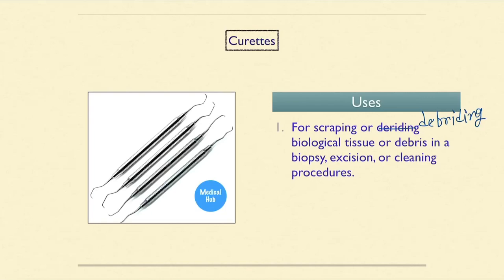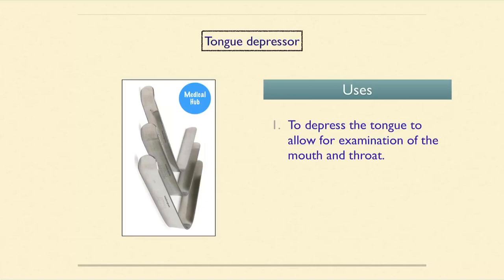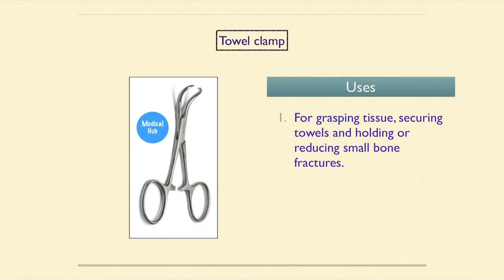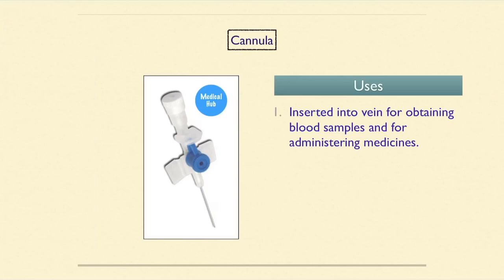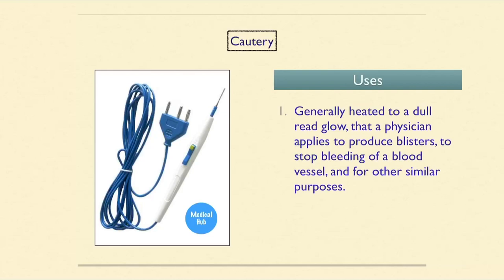The tongue depressor is used to depress the tongue to allow examination of the mouth and throat. The towel clamp is used for grasping tissue, securing towels, and holding or reducing small bone fractures. The cannula is inserted into the vein for obtaining blood samples and administering medicines. The cautery is heated to a dull red glow and applied to produce blisters, stop bleeding of a blood vessel, and for other similar purposes.